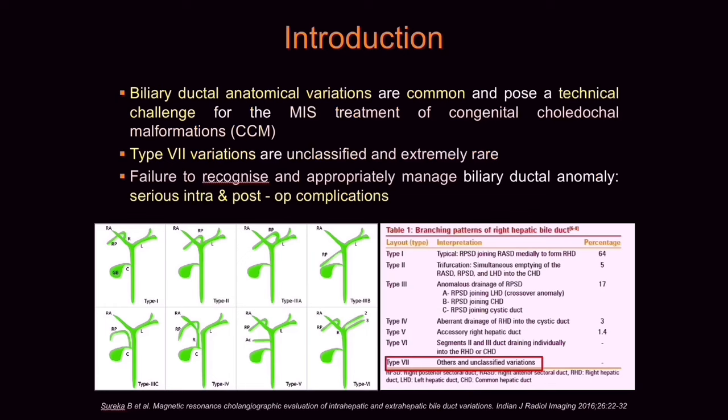Biliary ductal anatomical variations are common and pose a technical challenge for the MIS treatment of congenital choledocal malformations. The branching pattern of the right hepatic bile duct is used to classify the biliary ductal anatomy. Type 7 variations are unclassified and extremely rare. Failure to recognize and appropriately manage the ductal anatomical variations during surgery for choledocal malformations can cause serious intra and post-op complications.